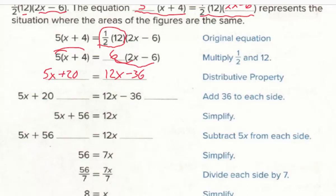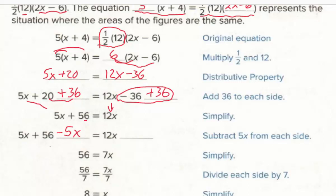On the next step, the textbook eliminates the constant term first by adding 36 to both sides. This zeros out the −36 on the right, leaving just 12x. On the left, 20 + 36 simplifies to 56, and 5x comes down. We still have variables on both sides, so instead of eliminating 56 first, we eliminate 5x by subtracting 5x from both sides. 12x − 5x gives 7x.